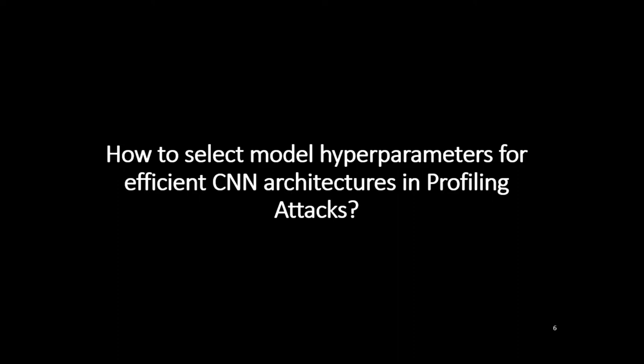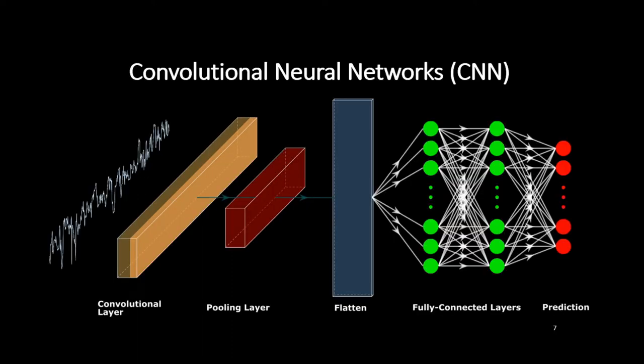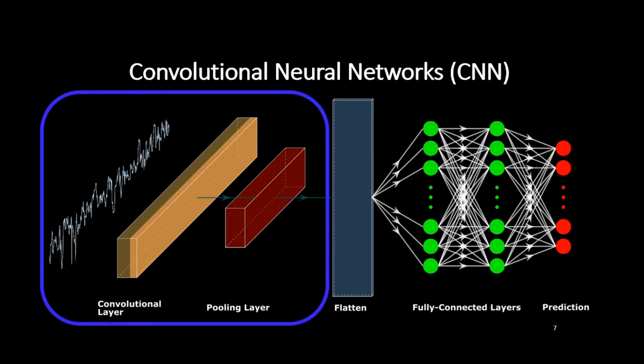Before answering this question, we have to understand how a CNN works. As demonstrated by Eleonora Cagli et al. at CHES 2017, the CNN can be used to reduce the desynchronization effect while remaining relatively efficient. In the CNN, the convolutional part of the network is known as the feature selection. In our work, we assume that once the convolutional part precisely locates the point of interest, then the classification part that recombines the features to accurately classify each input will be easier to configure.